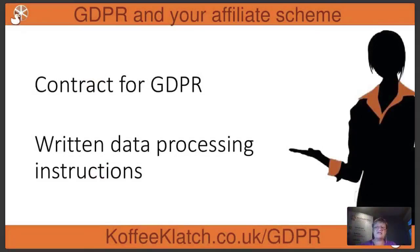Most of us have taken on board by now that part of GDPR security is that you have to contract for GDPR security and you have to have written data processing instructions, so that the people who handle data on your behalf know what they're doing. So when you're choosing an affiliate scheme, you're obviously going to be looking at where and how the affiliate scheme itself processes data.